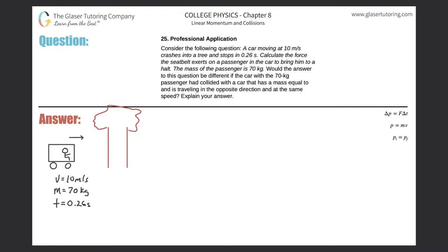Number 25, professional application. Consider the following question: a car moving at 10 meters per second crashes into a tree and stops in 0.26 seconds. Calculate the force the seatbelt exerts on a passenger to bring him to a halt. The mass of the passenger is 70 kilograms. Would the answer be different if the car collided with another car of equal mass traveling in the opposite direction at the same speed?